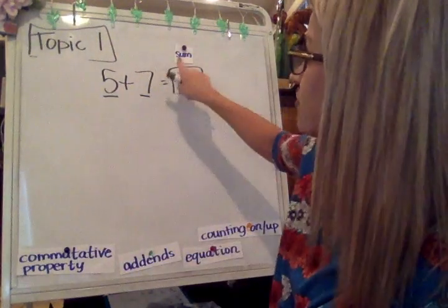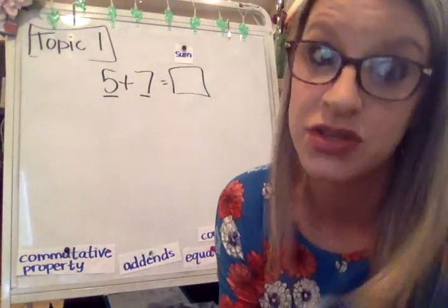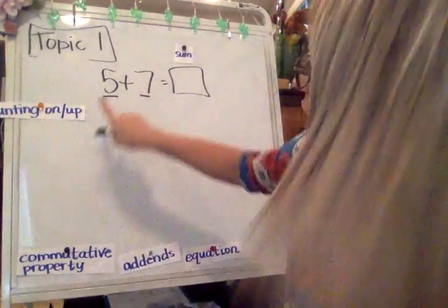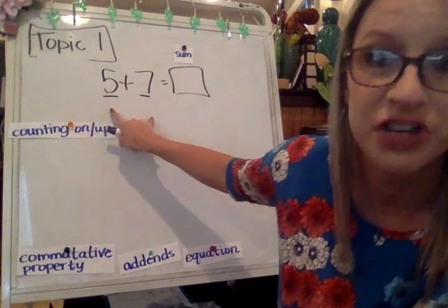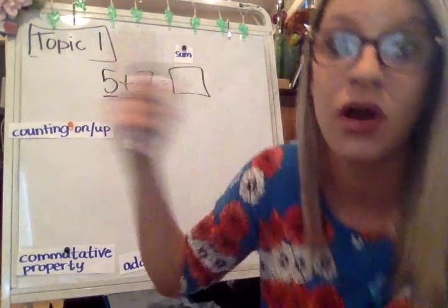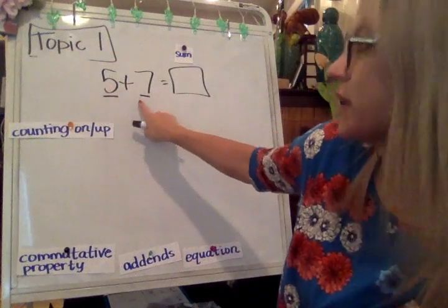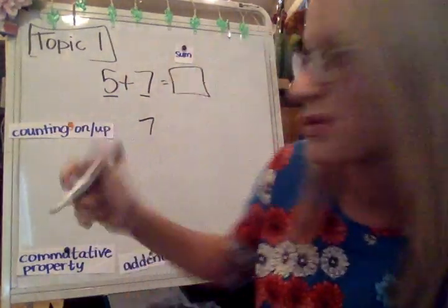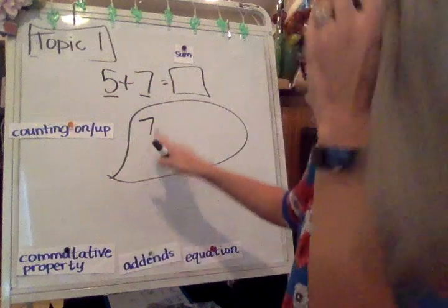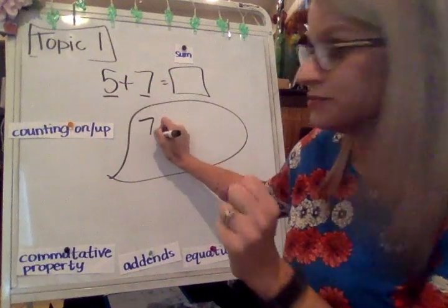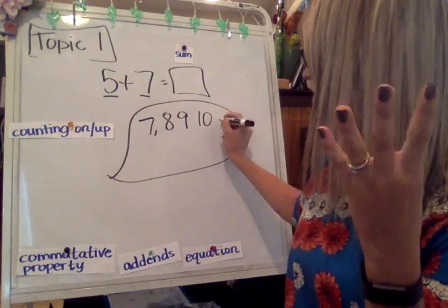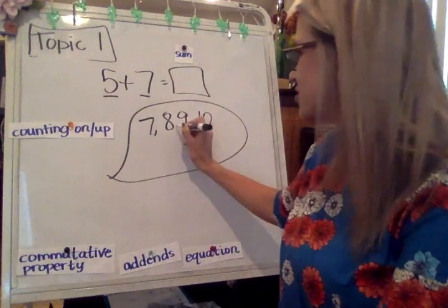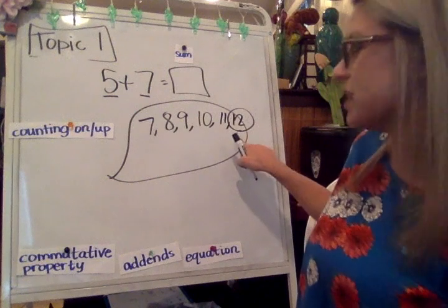I want to know what the sum of 5 and 7 is. Mrs. Lane says do this strategy called counting on. You might also hear it be called counting up. That just means start from the larger of the two addends and then put that number in your head and count on from there. So if I was going to do 5 plus 7 and I wanted to use count on, I would start at 7. Now you don't have to write this on your paper. This is just what I would be thinking inside of my head. So I would start at 7 and I would say 7, 8, 9, 10, 11, 12.